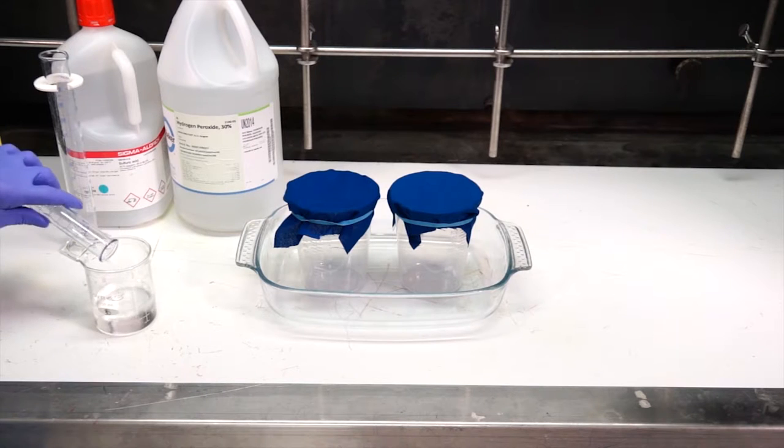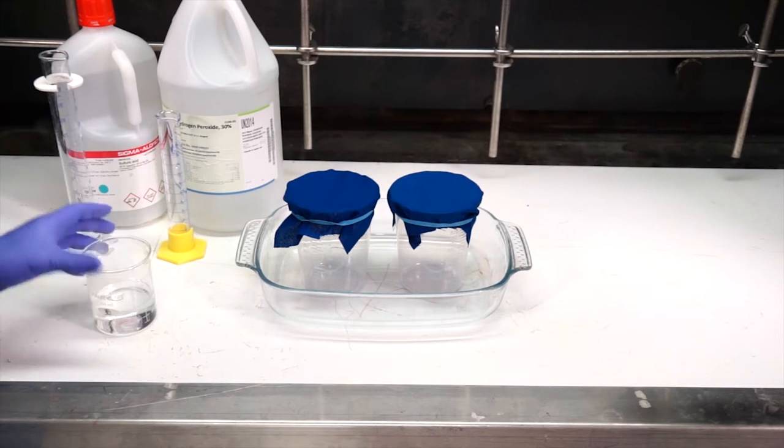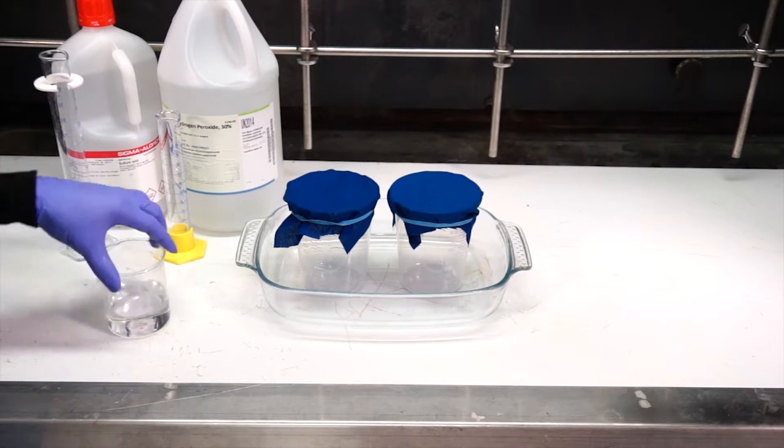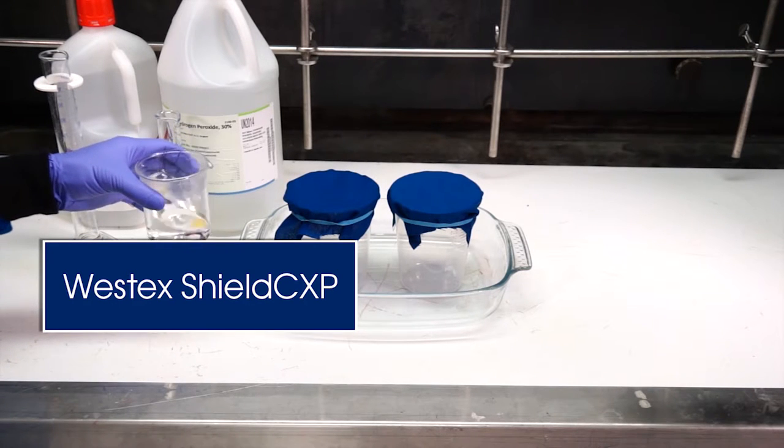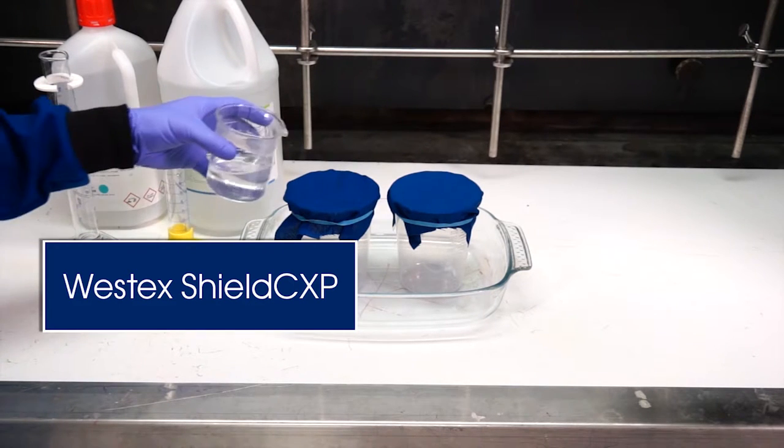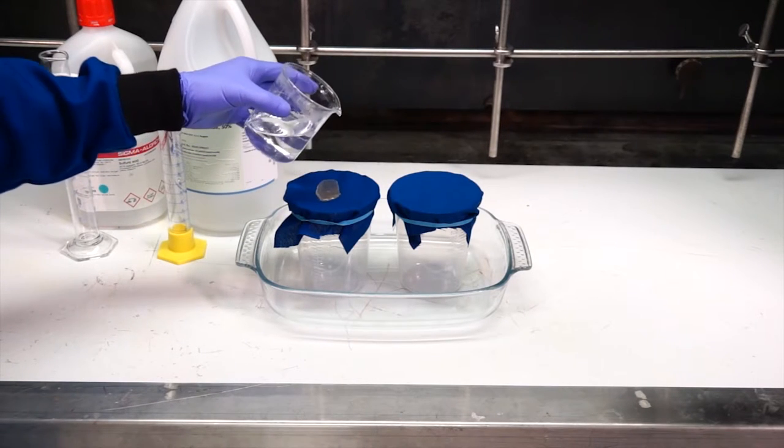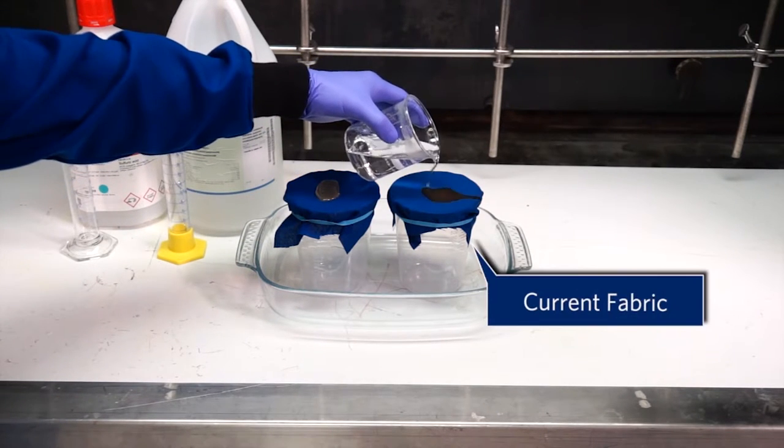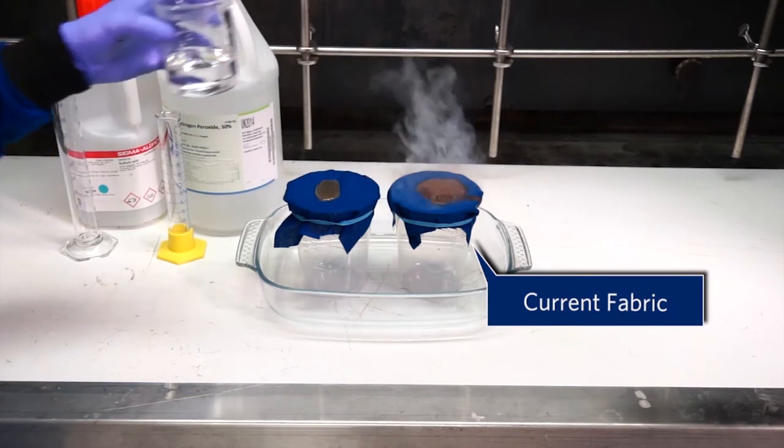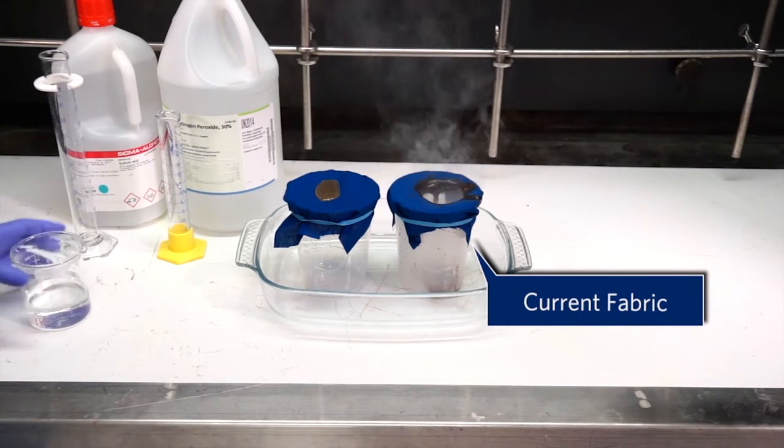And we're going to pour this on the fabric on the left. It pools. It doesn't go through. It resists penetration. When you pour this on a typical Nomex 3A, it immediately burns through.